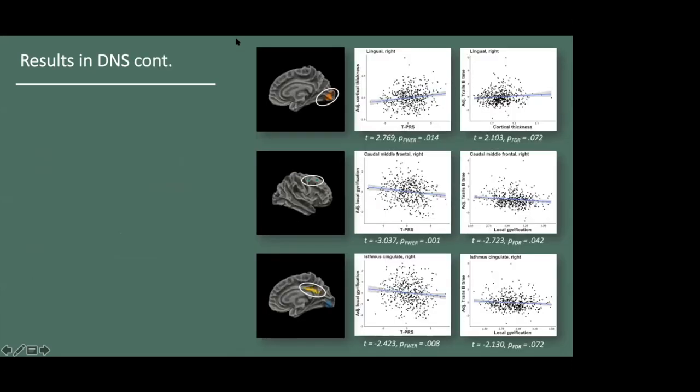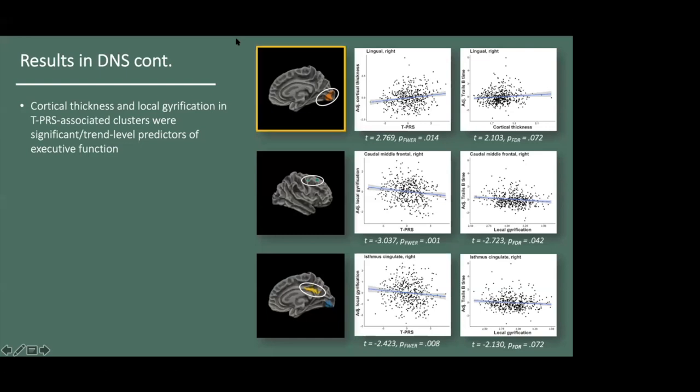Again, morphology in TPRS-associated regions was a significant or trend-level predictor of cognitive performance. In this case, greater thickness in the occipital cluster and less gyrification in the caudal middle frontal and isthmus cingulate clusters were associated with longer response time on the Trails B task. And again, direction of effect was consistent with that of TPRS. In other words, higher TPRS was linked to greater thickness and less gyrification in certain regions, and greater thickness and less gyrification in these regions was linked to poor executive function.